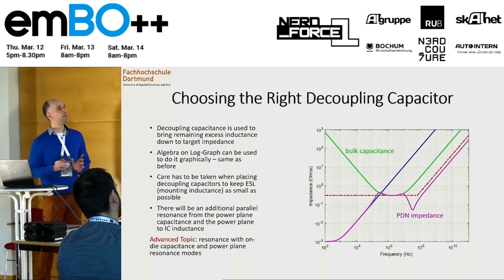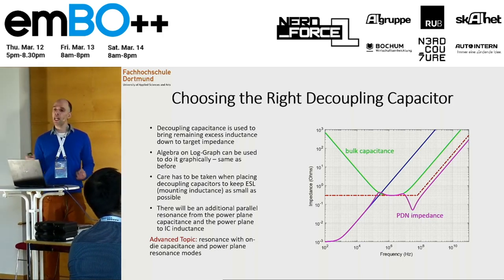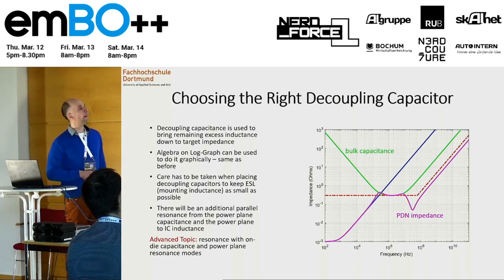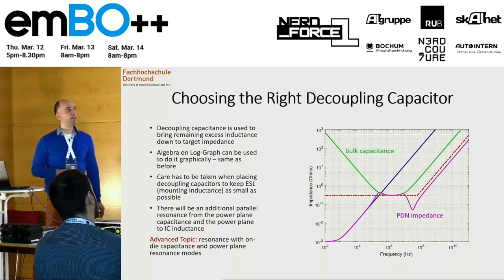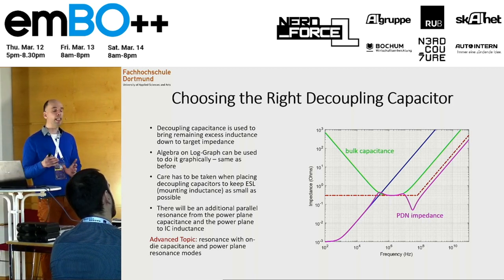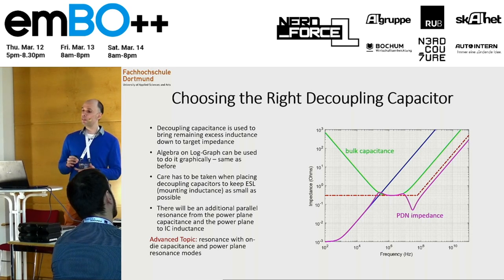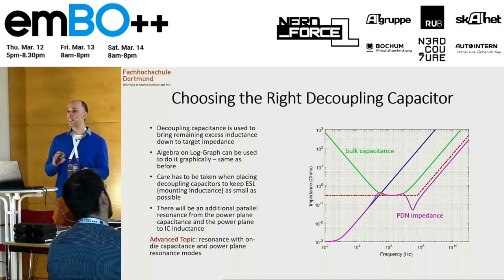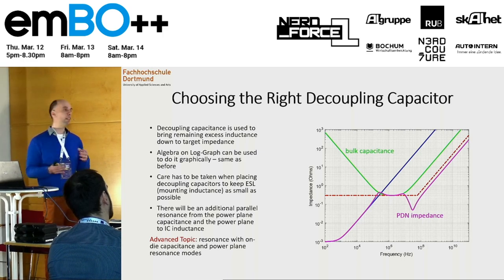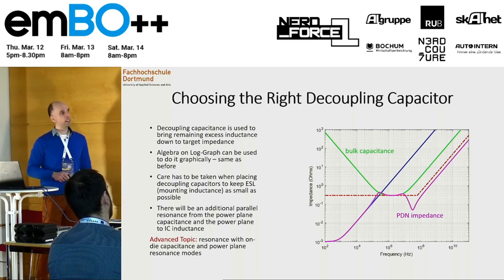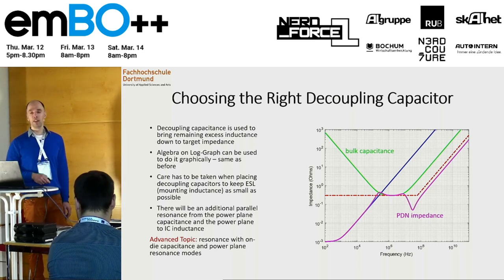If you look at very high-end stuff — gigahertz, or even starting at 500 MHz — there are also resonance modes. The PCBs themselves can be modeled: if you have ground planes, they are a kind of capacitor and they can resonate. So that would be a more advanced topic, but for a start it's good to know this.